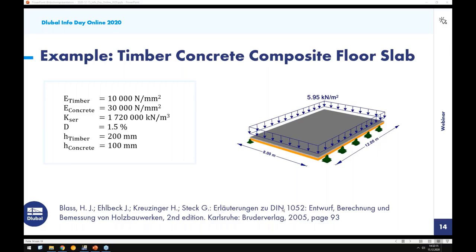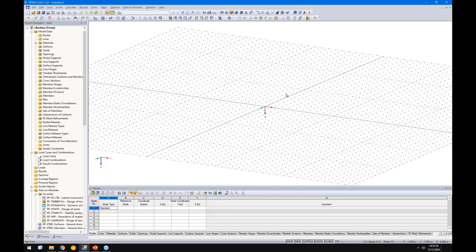This example comes from the German guideline DIN 1052, the old German timber code. On page 93 you can follow this example, which was done by hand calculation with analytical equations. We will now compare those results with FEA analysis. The slab is 8 meters by 12 meters and the mass is 595 kg/m².